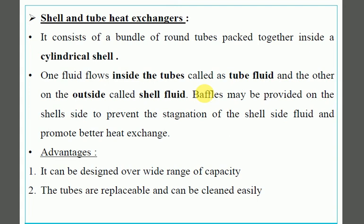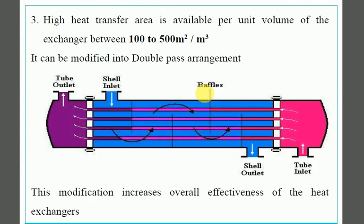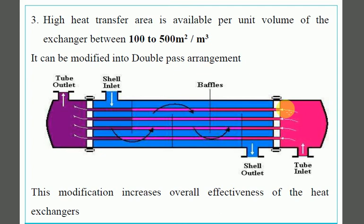The other type is the shell and tube heat exchanger. The arrangement is a modification of the double pipe arrangement. Cold fluid enters on one side and hot fluid is on the outside. Baffles create circular motion of liquid flow. Heat exchanging area increases — around 100 to 500 square metres per cubic metre per unit volume of the heat exchanger.